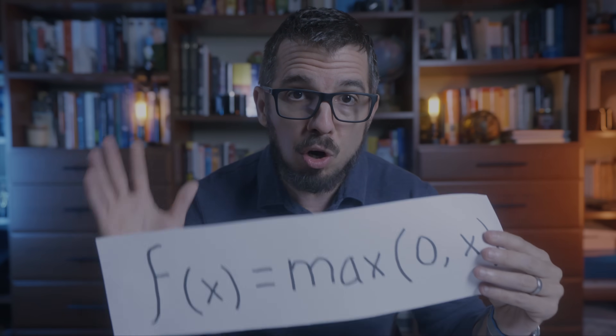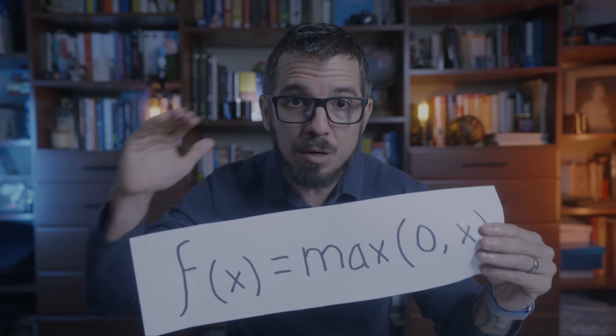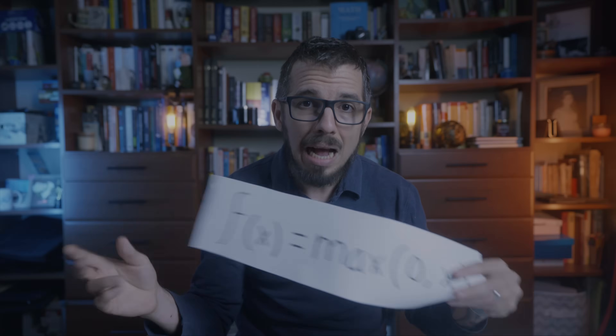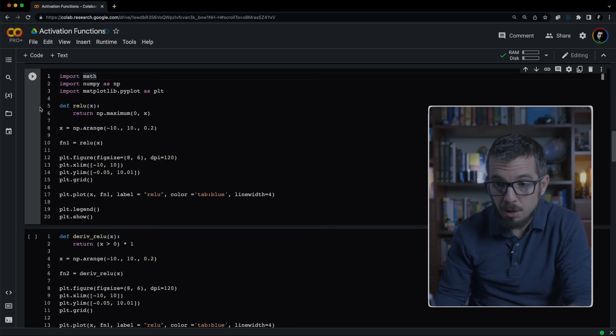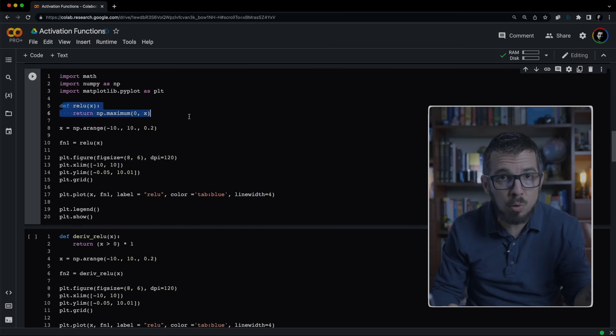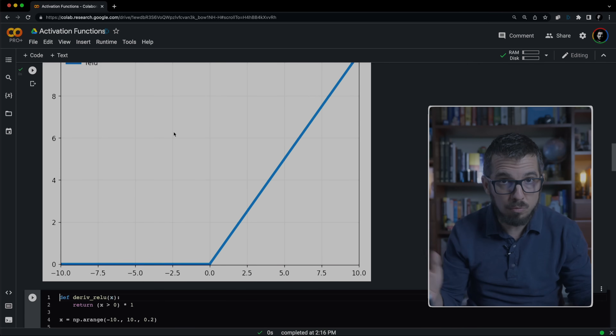But here is the most surprising part. This function that works so well doesn't even meet one of the most basic requirements of an activation function — this function is not differentiable. So how come the simplest function that doesn't even meet the requirements is the one that makes everything work? I have a very simple notebook here to plot the rectified linear unit — for short, we call it ReLU. If I run this cell, we get the chart.